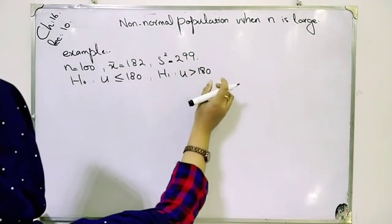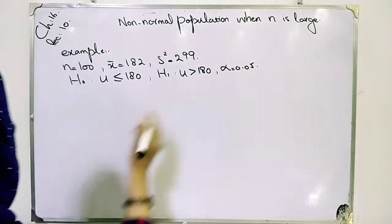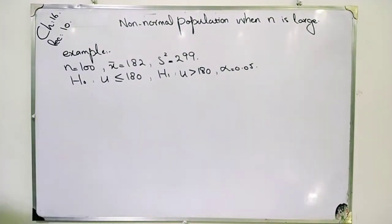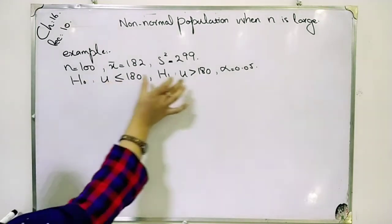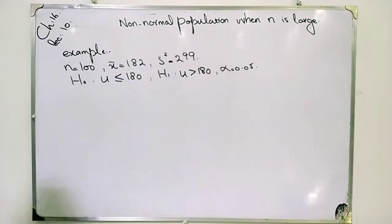Take alpha equal to 0.05. I am reading the question: 100 observations from a population known to be non-normal yielded sample values x̄=182 and s²=299. Test the hypothesis H0 against H1, taking level of significance α=0.05.